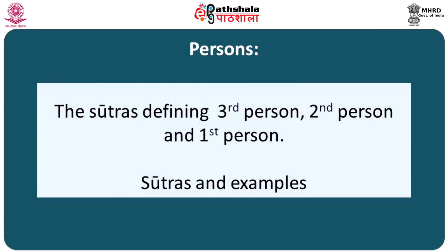Sutra Sheshe Prathamaha 1.4.108 defines the third person. Third person triplets are used after a verbal root when a pronominal term other than Yusmat and Asmat co-occurs as a complementary word, either expressed or implied, denoting the same thing. For example: Sa/Sa/Tat Pachati — he/she/it is cooking; Tau/Te Pachataha — they two are cooking; Te/Ta/Taani Pachanti — they are cooking.